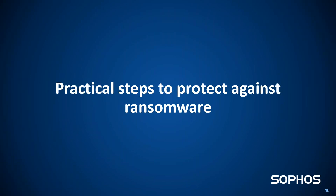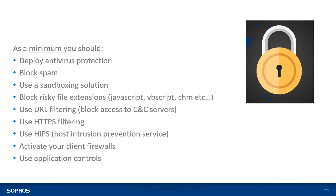Now, what are the practical steps to protect against ransomware? As a minimum: deploy good antivirus protection; block spam using sandboxing; do not allow risky file extensions like JavaScript, CHM, or VBS scripts. Use URL filtering — this also blocks your node from communicating with command-and-control servers. SSL-based filtering is of prime importance. Use Host Intrusion Prevention to reduce attacks. Activate the client firewall and only allow specific ports required for general working purposes. Use application control so users don't run vulnerable applications.